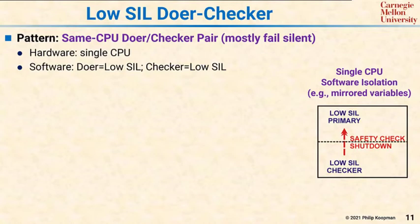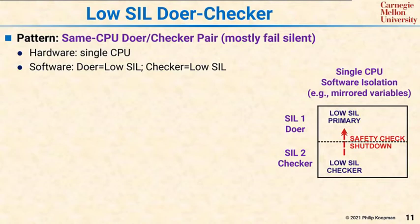There's a single hardware CPU and two partitions of software. The SIL1 doer actually operates the system while the SIL2 checker is in charge of safety. Assuming there's adequate isolation between the doer and the checker, the checker can be responsible for all the safety functions, and the doer can do whatever it pleases so long as it doesn't interfere with the checker.